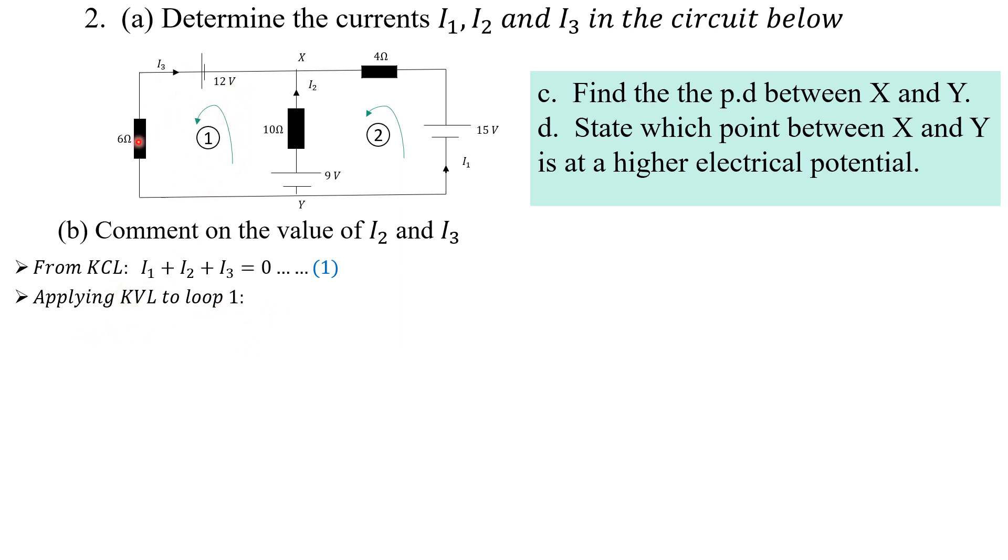Now let's apply voltage law to loop one. We're traversing the way I've indicated. Let's sum up the EMF first. If I'm traversing like this, negative to positive, this guy is positive. I traverse like this, negative to positive, this guy is positive too, so you have 9 plus 12 there. Now let's get the PDs. If I'm traversing like this in the direction of current across this resistor, that is positive 10I2. If I traverse like this, remember that I3 is going upwards, so I'm traversing against I3, so that's negative 6I3. We can simplify this to make the equation read 21 equals 10I2 minus 6I3. That's our equation two.